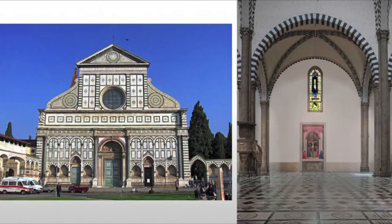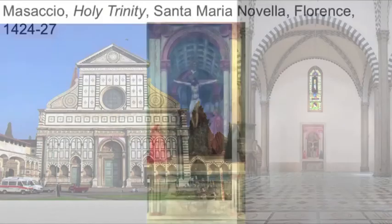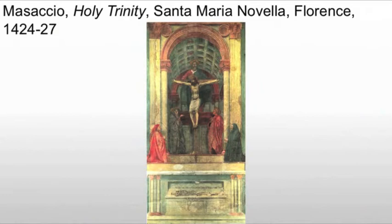Masaccio also famously creates the Holy Trinity, and this is in Santa Maria Novella. We have visited this church before and will be back to it again. This is the premier example of the use of math in depicting space.